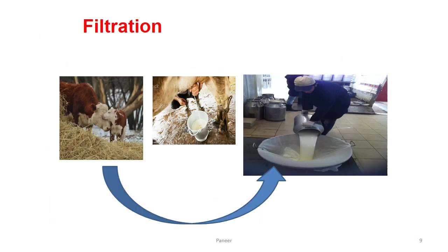Filtration is very important because cows are always associated with paddy straw, dust, dung, and other contaminants, so there is always a possibility of particles or dirt in the milk. To remove these, we must pass the milk through filtration. This step is very, very important.